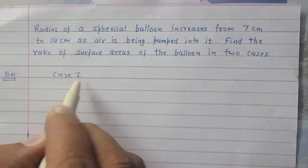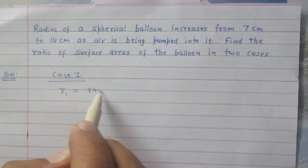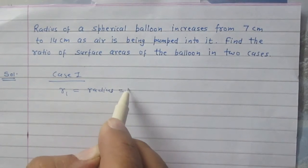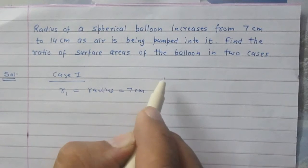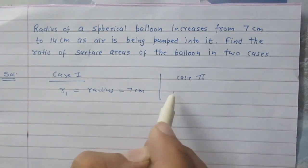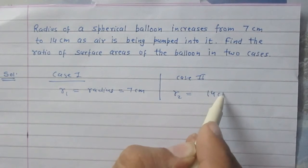Let us consider case 1 where R1 is the radius of the spherical balloon, it is 7 cm. And in case 2, R2 is the radius of the spherical balloon, it is 14 cm.